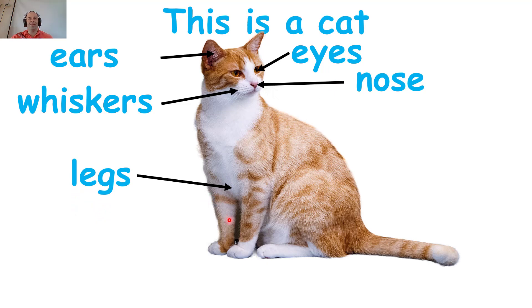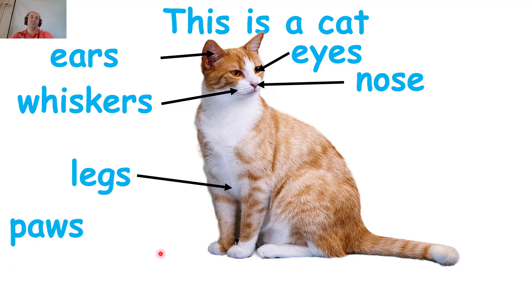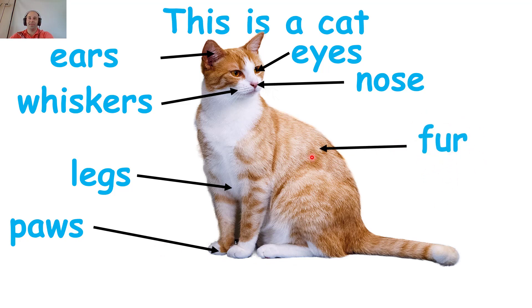Legs — right here, the legs. The cat has legs. A cat has four legs. And the cat has paws — at the end of its legs, it has paws. The cat has four paws. A cat has fur — this is the fur. And one more: a cat has a tail. The tail of the cat.